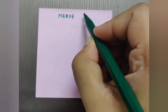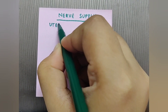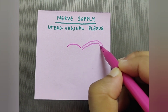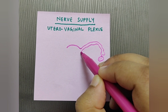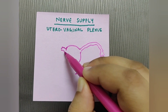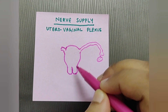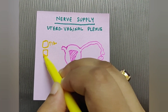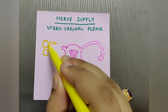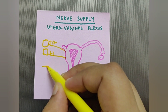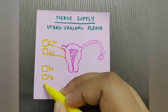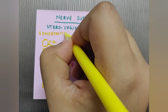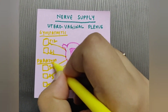Now the nerve supply of the uterus — it is supplied by the utero-vaginal plexus. The sympathetic nerve supply comes from T12 and L1, whereas the parasympathetic supply comes from S2, S3, and S4, also known as the pelvic splanchnic nerves.